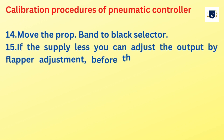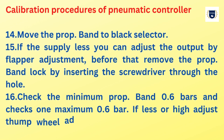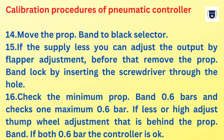Move the proportional band to the black selector. If the supply is less, you can adjust the output by flapper adjustment. Before that, remove the proportional band lock by inserting a screwdriver through the hole. Check the minimum proportional band at 0.6 bars and the maximum at 0.6 bar. If less or high, adjust the thumbwheel adjustment behind the proportional band. If both read 0.6 bar, the controller is okay.